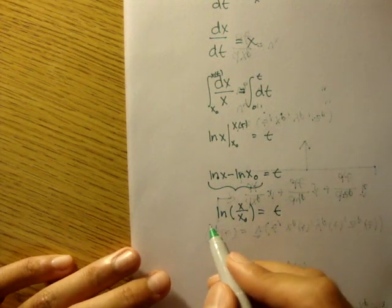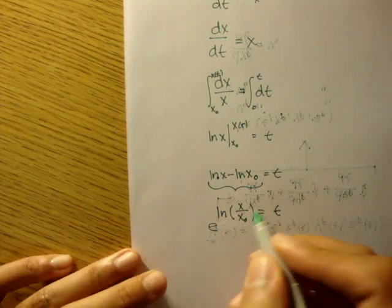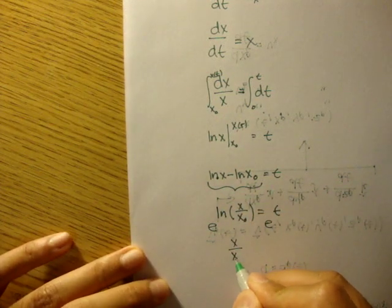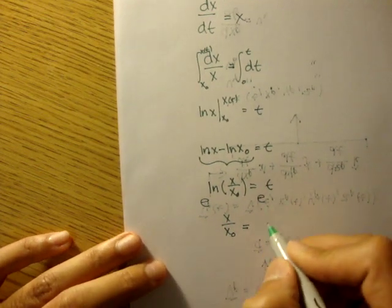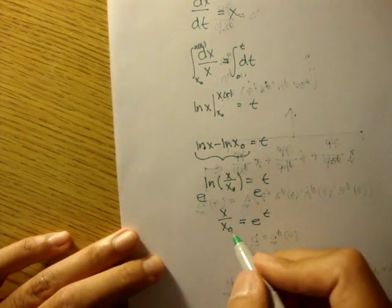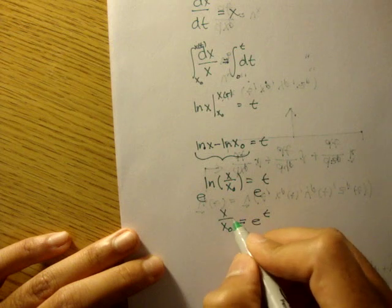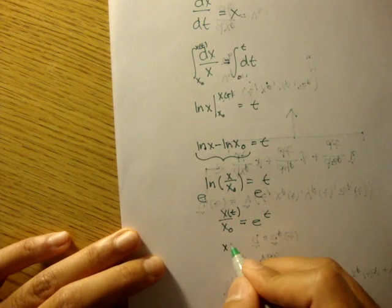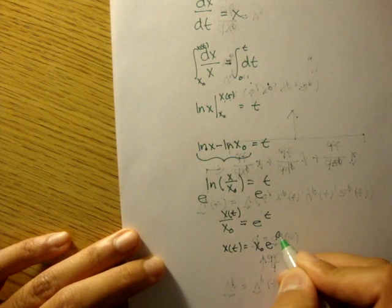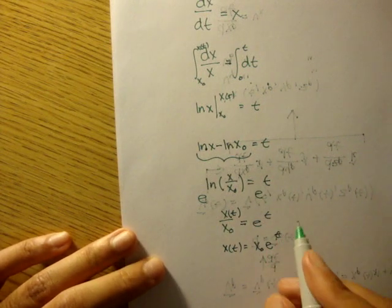Now if we exponentiated both sides, if we e'd both sides, we would get x over x naught is equal to e to the t. And so finally, our x here, which is dependent on time, our x here would be equal to x naught times e to the t.